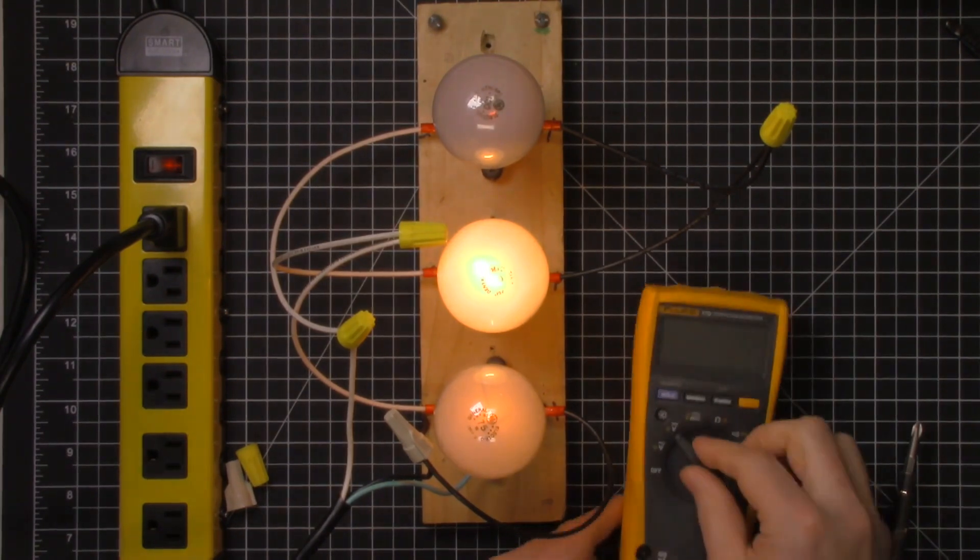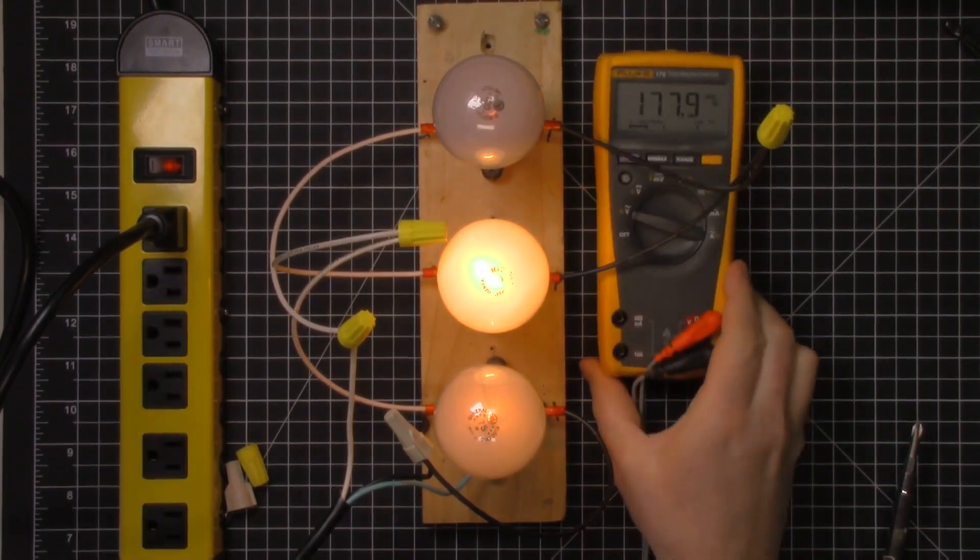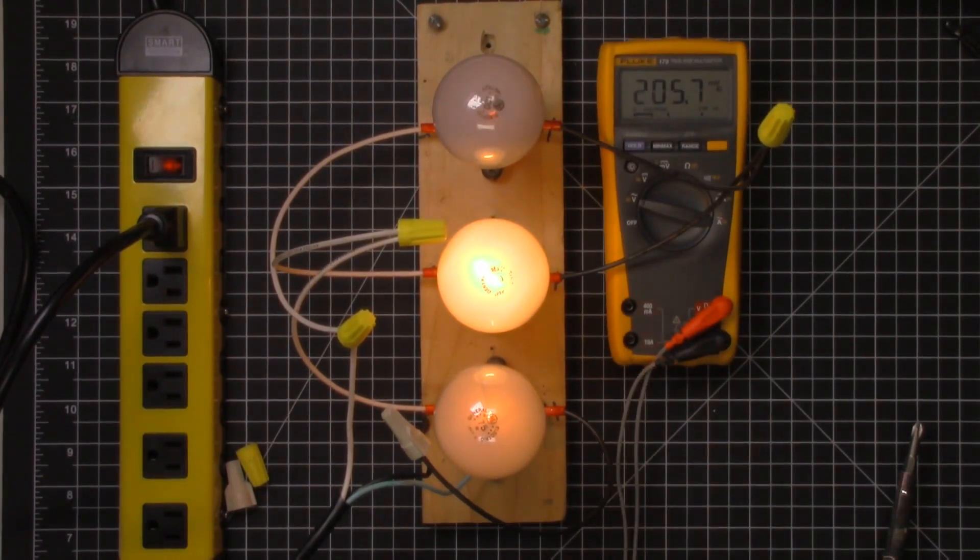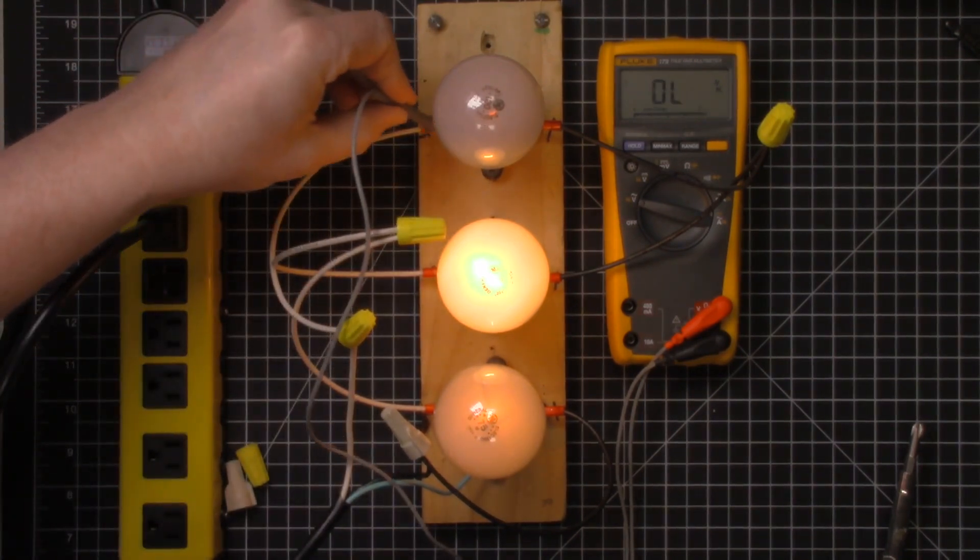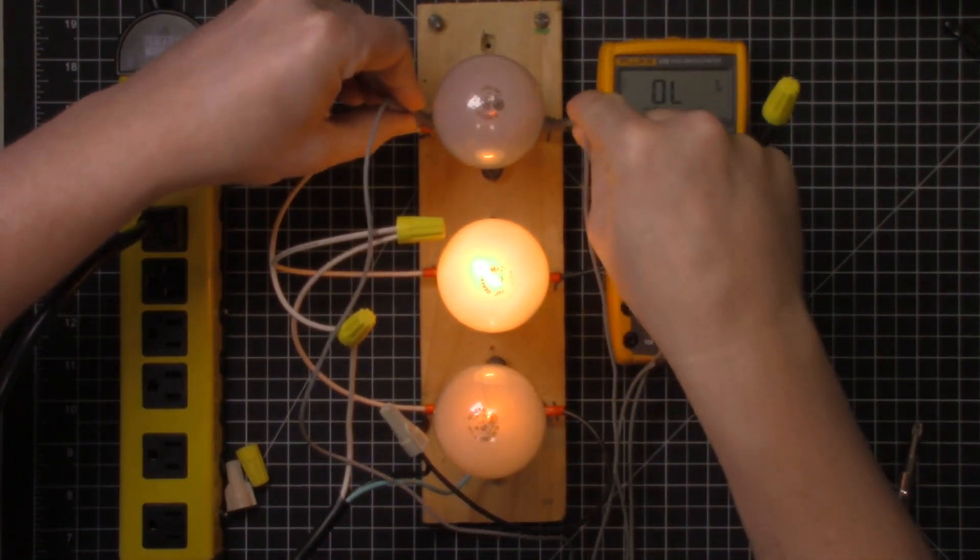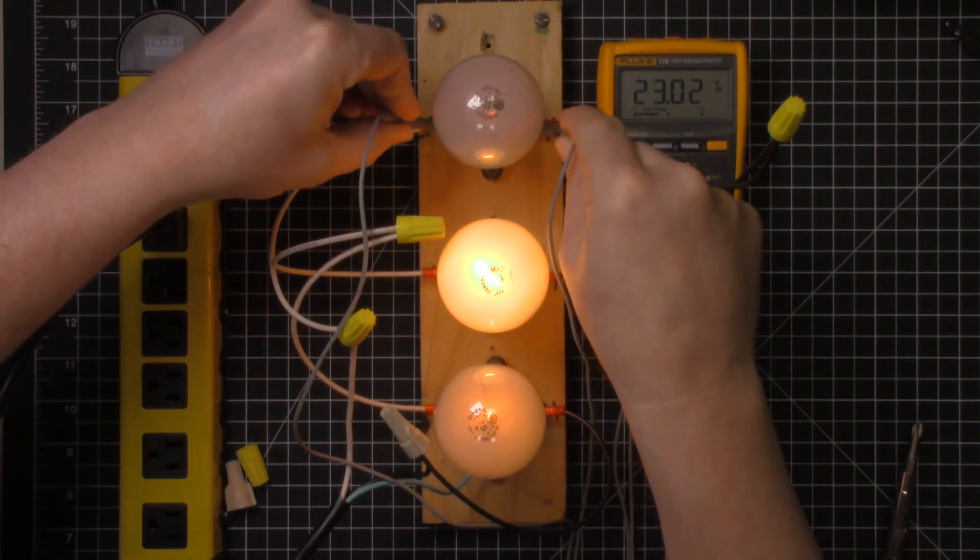So I've got my multimeter and we'll set the multimeter up to measure volts AC. Getting a nice spot where you can see it. And we'll go across here and remember that in a series circuit the voltages are all going to be additive. So if I was to measure the voltage from this point to this point, I get 23 volts.